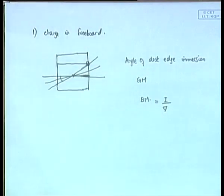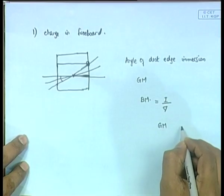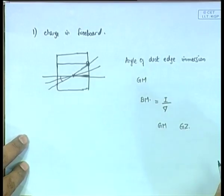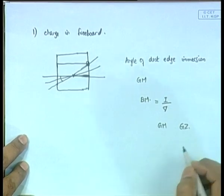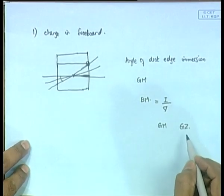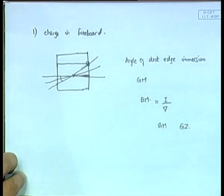The breadth b keeps increasing as the ship heels — the formula for second moment of area is lb³/12 — so b increasing means I increases, which means M keeps going further up, which means GM keeps increasing. Now if GM increases, we know that GZ also increases, since GZ = GM sin φ. Therefore when GM is increasing, your GZ is increasing.